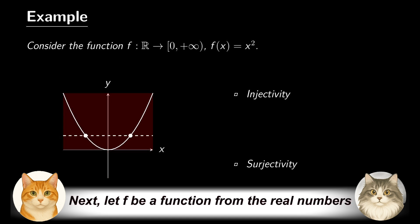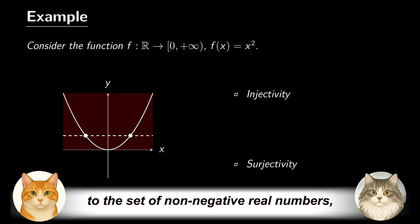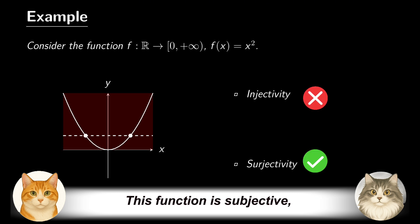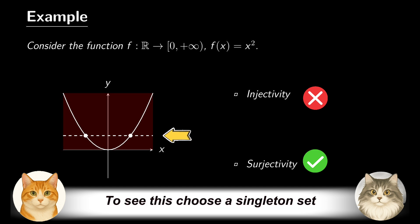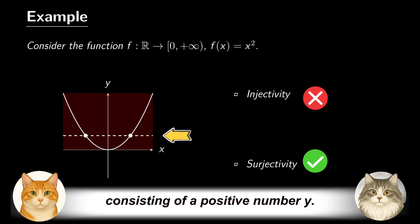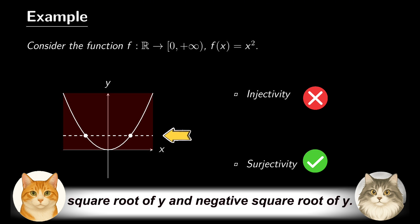Next, let F be a function from the real numbers to the set of non-negative real numbers, still given by f(x) equals x squared. This function is surjective, yet it is not injective. To see this, choose a singleton set consisting of a positive number y — the preimage consists of two distinct numbers: the square root of y and negative square root of y.